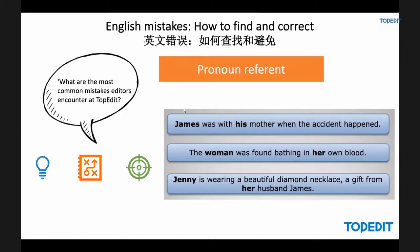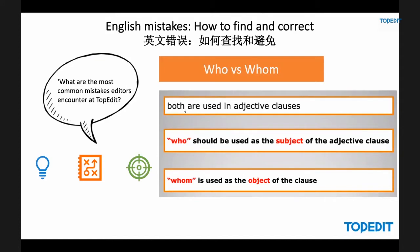Here are some examples of pronoun reference used correctly: 'James was with his mother when the accident happened.' 'The woman was found bathing in her own blood.' 'Jenny is wearing a beautiful diamond necklace, a gift from her husband James.' You can see that the pronoun references are correct in the right gender to the nouns. These are specific situations where our editors notice this is a mistake people tend to make in English.